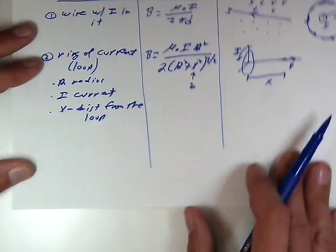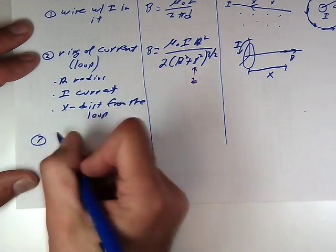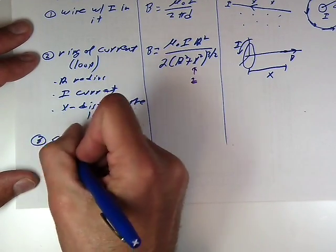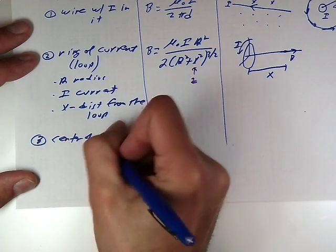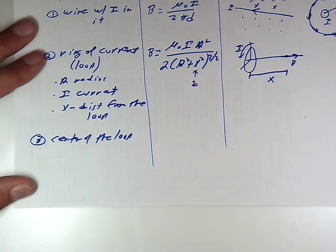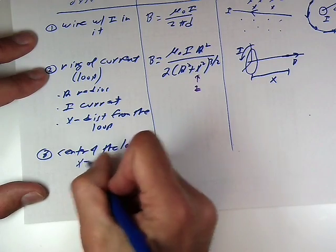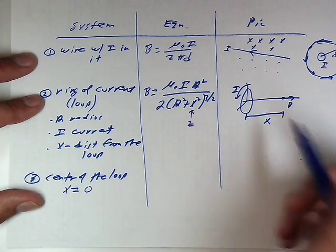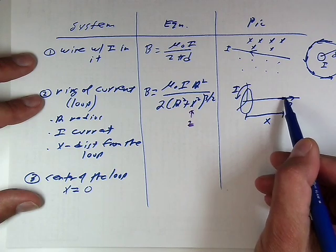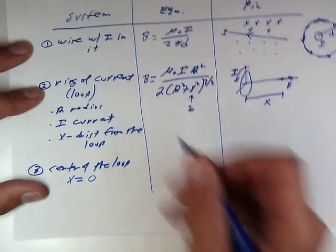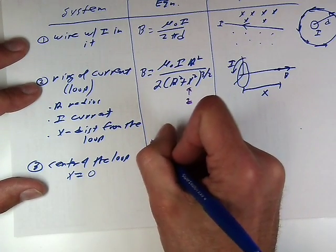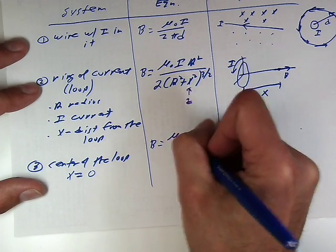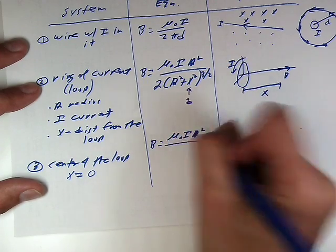So there's a freebie we can get out of this as well to actually add a third item to this list here. What about at the center of the loop? We can get by just putting here x equal to zero from this equation right here, because that's how we shrink to the center. We take this observation point and pull it all the way to the center of the loop like that. Well, we get a result that looks like this.